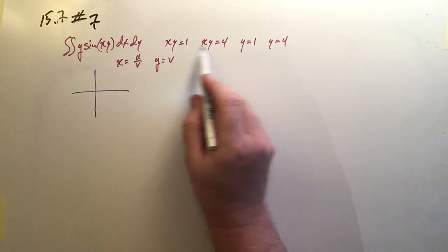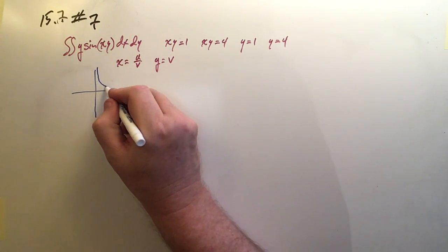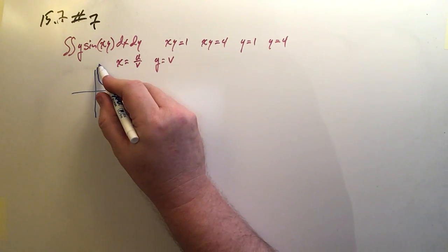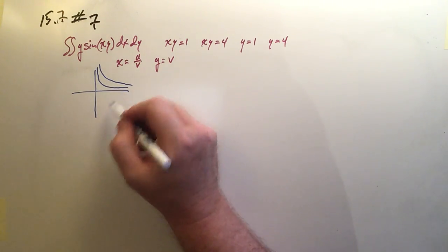Okay, so these guys are hyperbolas. They're hyperbolas in the first and third quadrants. So one of them lies really close to the axis, that's x equals 1, and the other one lies a little further out. That's x equals 4.